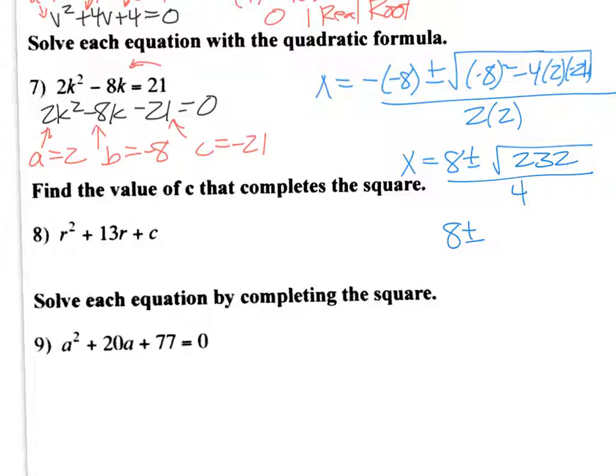So 8 plus or minus. So I got to think of a square that's a factor of 232. Since it's an even, I always start with 4 because 4 is a square and that's 4 times 58. 8 square root of 4 then is 2. So 2 comes out. So I get 8 plus or minus 2 square root of 58 over 4. Then I try 58.